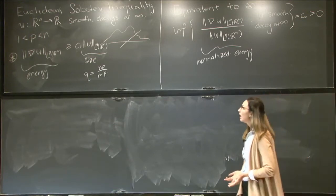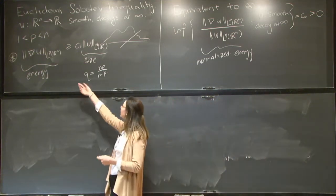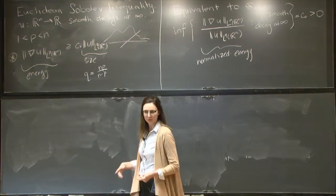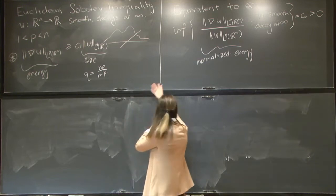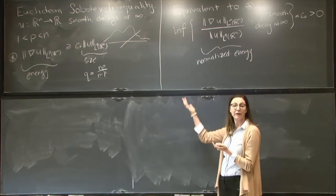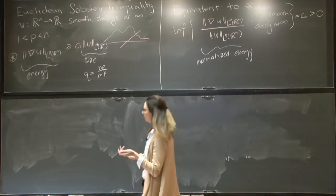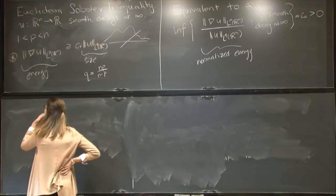So given this inequality for which we've put down the best possible constant, one then may ask the question: is equality ever attained in this inequality? An equivalent thing to say is, are there minimizers in this variational problem? So let me say the following: